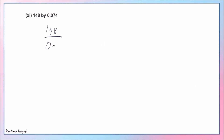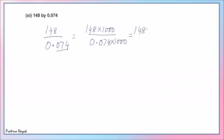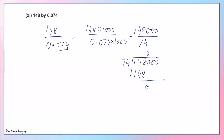Part 11: 148 divided by 0.074. There are three digits after the decimal, so multiply by 1000, giving 148000 divided by 74. This simplifies easily: 74 times 2 is 148, so 148000 divided by 74 equals 2000. Answer: 148 divided by 0.074 equals 2000.